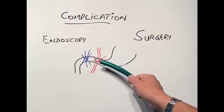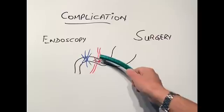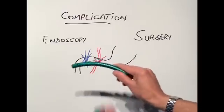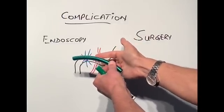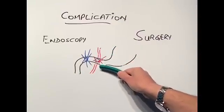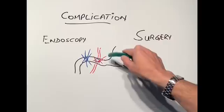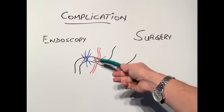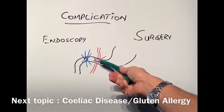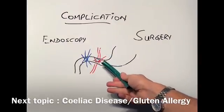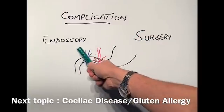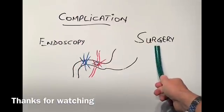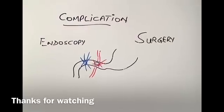The third complication is the ulcer eroding at the back, where a large blood vessel sits behind the duodenum. Like hitting a mains water pipe, all the blood starts leaking out and the bleeding can be absolutely torrential. The way to stop it is either with an endoscopy if possible, but if bleeding cannot be controlled that way, surgery will be required to save the person's life. I do hope you enjoyed this video and I hope to see you very soon. Take care.